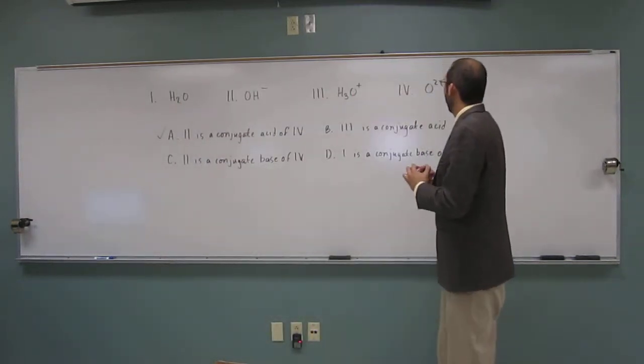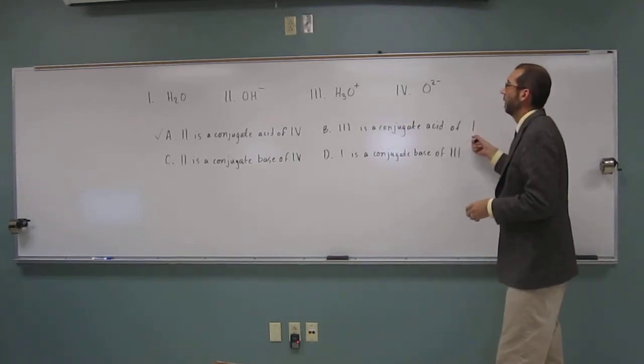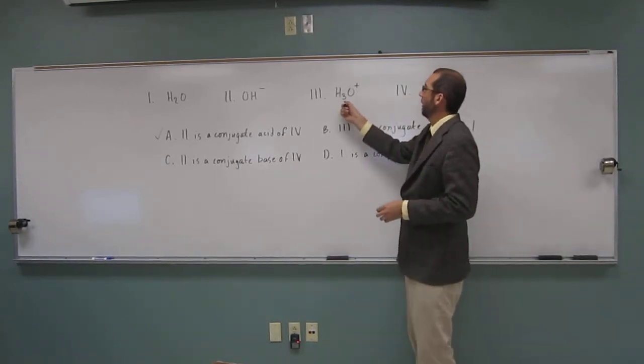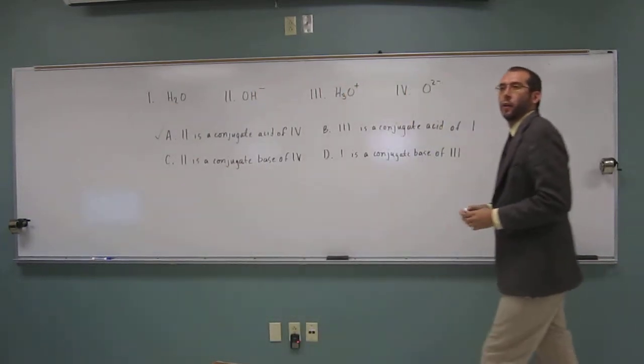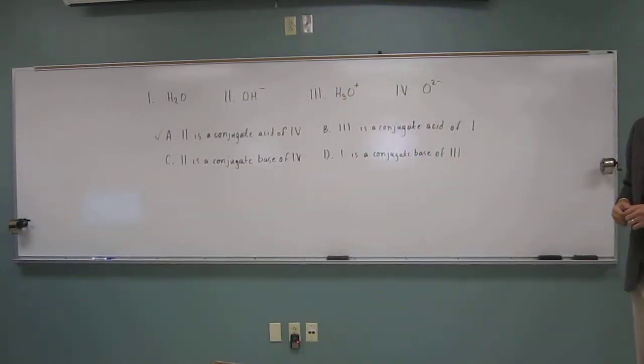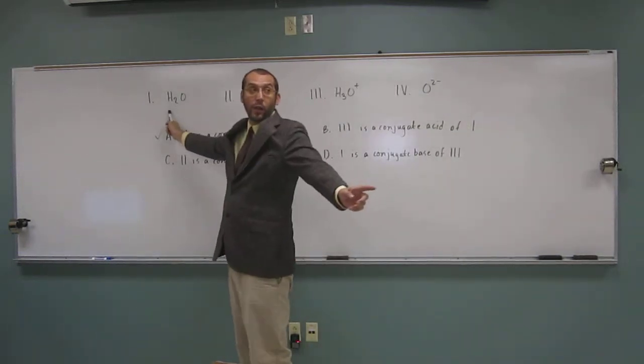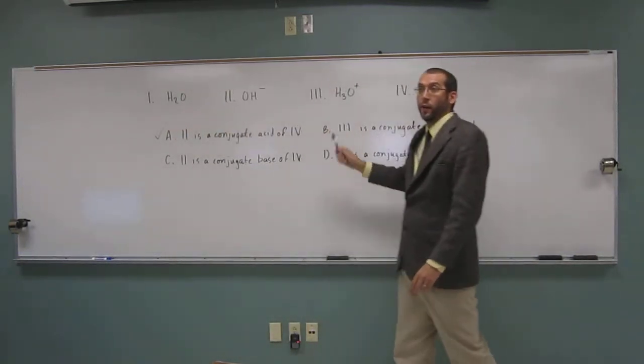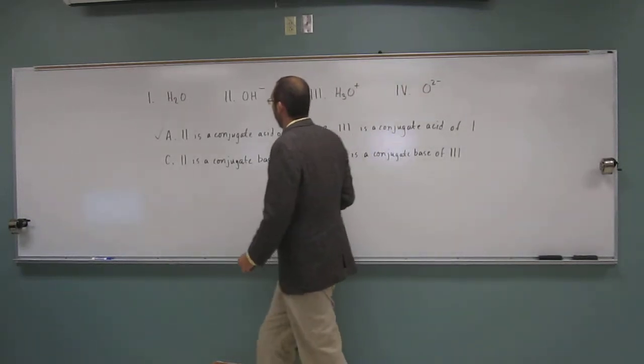What about B? 3 is a conjugate acid of 1. So is 3 a conjugate acid of 1 there? Yes, because what do we have to do? Add H plus, right? And when we add H plus to H2O, we get what? H3O plus. Right, so that's right.